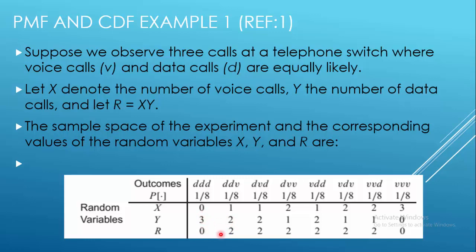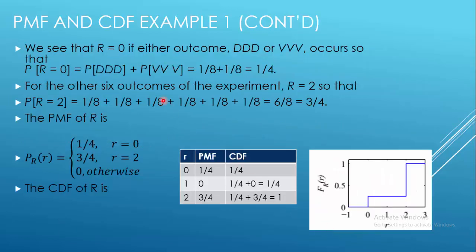So three times zero gives R equal to zero. R equals zero when either all calls are data (DDD) or all calls are voice (VVV). So P(R=0) is the probability of all data calls plus the probability of all voice calls: 1/8 plus 1/8 equals 1/4.